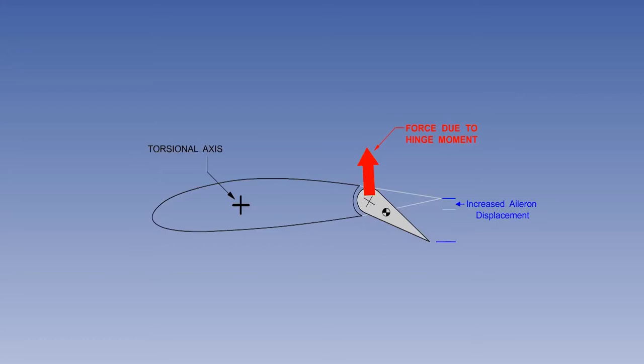Because the CG of the control surface is aft of the hinge line and because there is always a small amount of backlash in the control system, when the wing twists, the aileron displacement will be increased slightly.